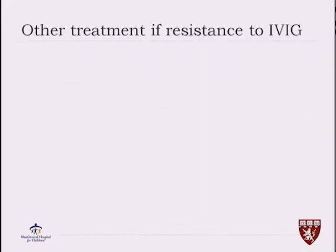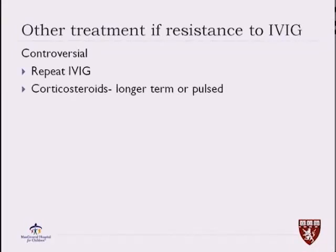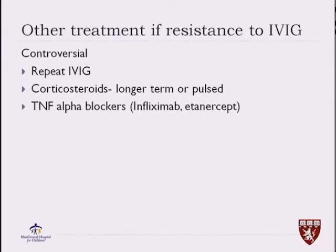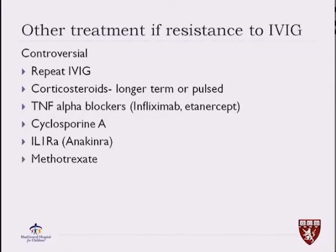If someone is very resistant to IVIG, the treatment becomes very controversial and we rely on some unpublished data, talking to Kawasaki experts. Usually we can repeat IVIG. We may try corticosteroids, either pulsed then long-term. We can try TNF-alpha blockers, cyclosporine, interleukin receptor antagonists, or methotrexate.